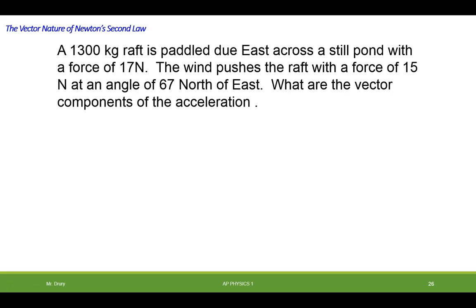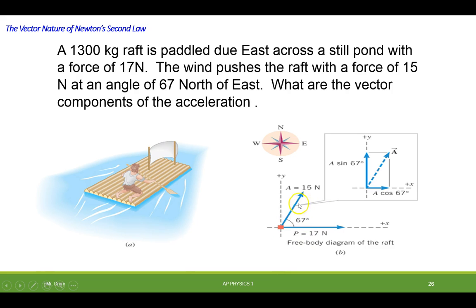Okay, here's an example of that. You have a 1300 kilogram raft. There it is. It's paddled due east across a still pond with a force of 17 Newtons. The wind pushed the raft with a force of 15 Newtons at an angle of 67 degrees north of east. What are the vector components of the acceleration? All right, so here's the original diagram we have right here. 17 Newtons due east, and then we have a vector of 15 Newtons at an angle of 67 degrees north of east. We'd have to take this vector and break it into its components, as you can see here. Then we have to add them all together.